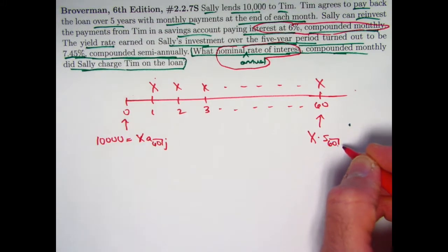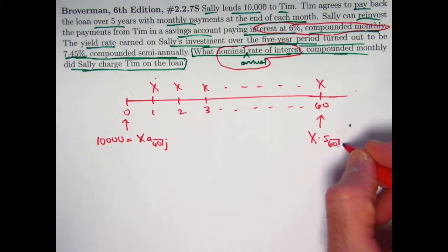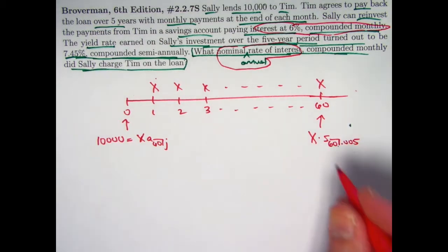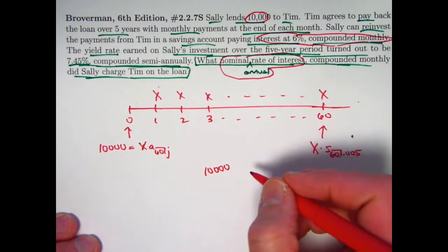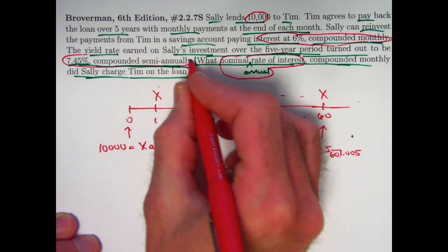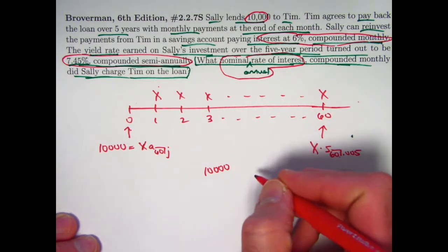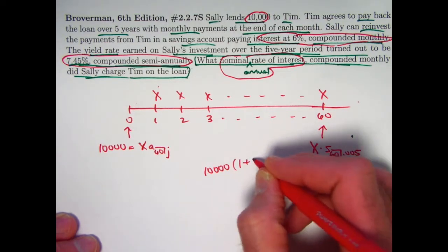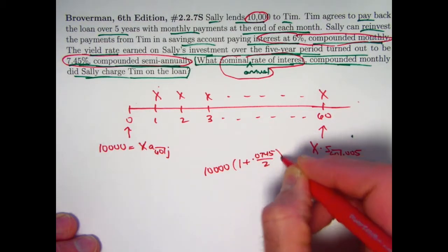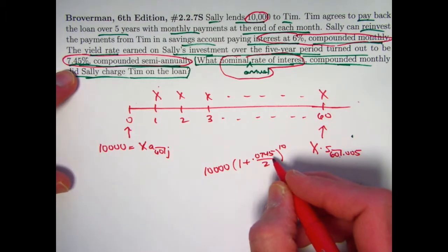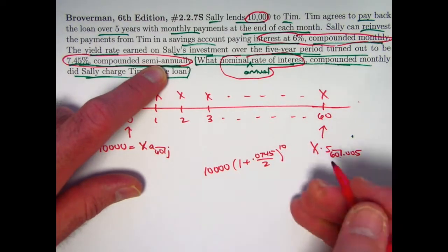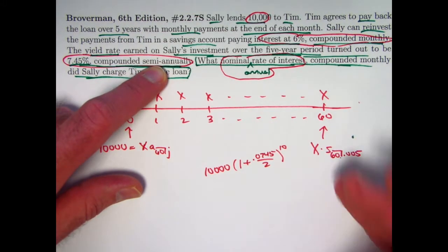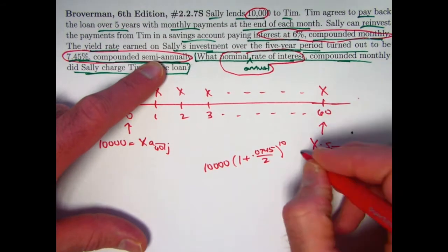The interest rate in s-angle-60 is not j — the monthly rate Sally charges Tim — but rather 6% divided by 12, which is half a percent or 0.005. That future value must also equal her initial $10,000 investment times an appropriate growth factor. Since her yield rate is 7.45% compounded semi-annually, the growth factor is (1 + 0.0745/2) raised to the 10th power — because 7.45% is divided by two for semi-annual compounding, and there are 10 half-year periods in five years. These two expressions must be equal.